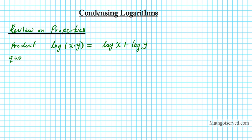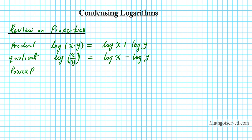The other one is the quotient property. If the logarithmic arguments are being divided by each other, it can be rewritten as the difference of the numerator and the denominator of the logarithmic quotient. Another property we're going to be applying today is known as the power property — it's just the result of repeated multiplication.